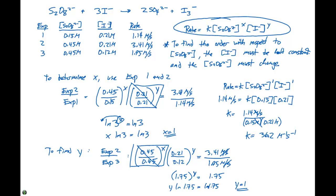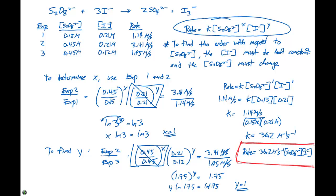We can use this to write the overall rate law: rate equals K, which is 36.2 M⁻¹s⁻¹, times S₂O₈²⁻ to the first power, times I⁻ also to the first power. This is our overall rate law for this particular expression.